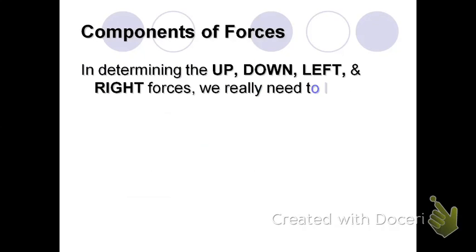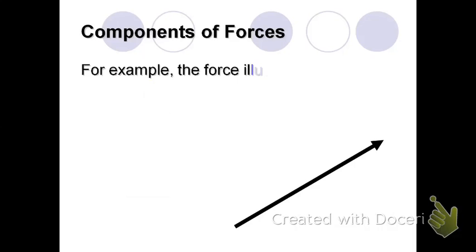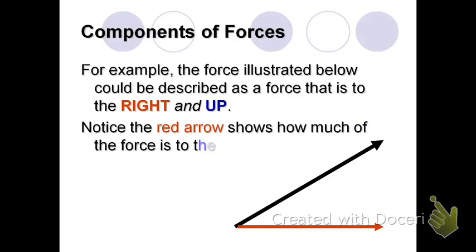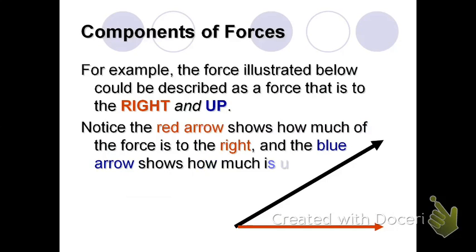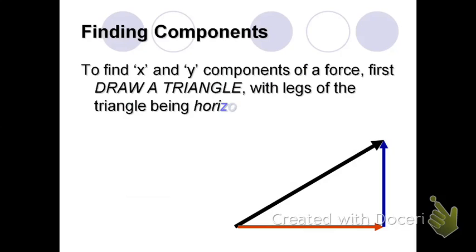So in determining the up, down, left, and right forces, we really only need to look at the part of a force that is in each of those directions. And those parts are called components. So for example, here we have a force that can be described as it's to the right and it's up. Here the red arrow shows how much of the force is to the right, and the blue arrow shows how much of the force is up.